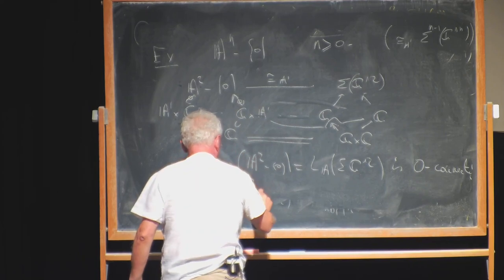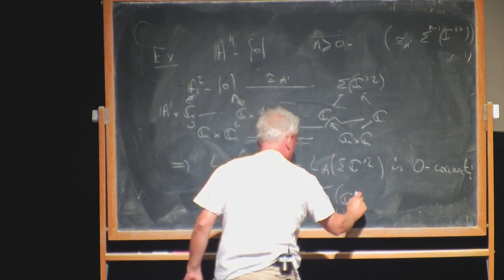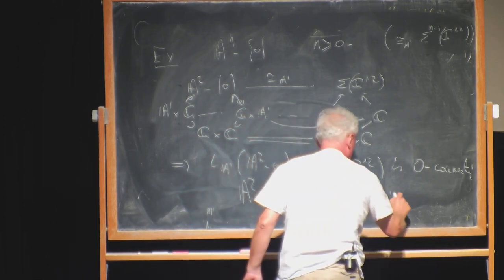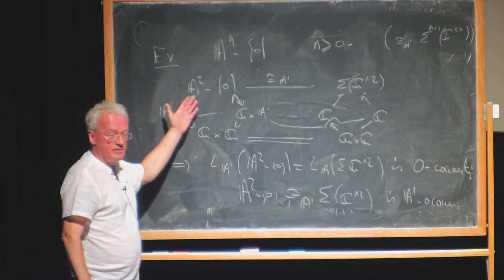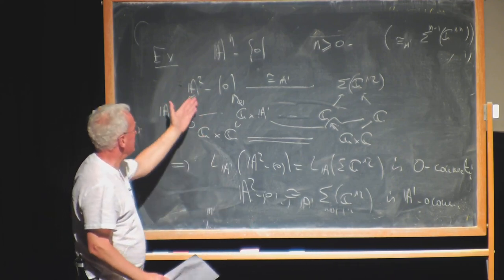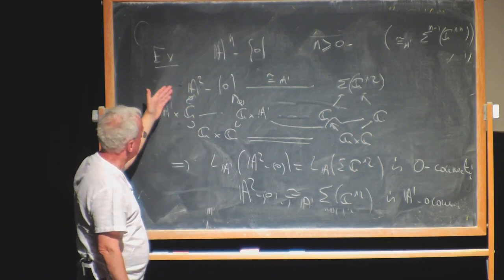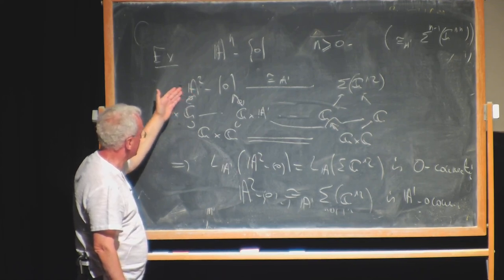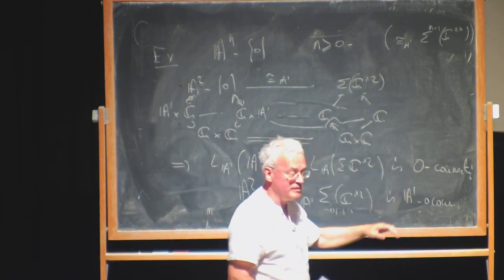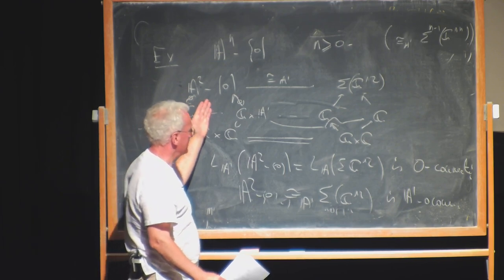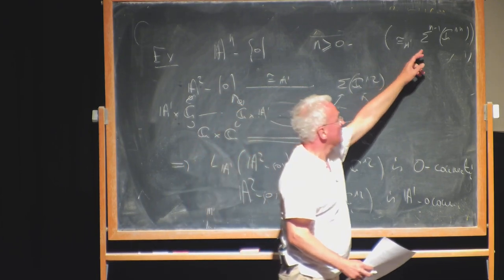So we can say: A^2 minus zero is A1 equivalent to Σ(G_m ∧ G_m) and is A1 zero-connected. You could also prove this directly: to be A1 connected it suffices to be A1 chain connected, and taking any field extension and rational points in this scheme, you can join any two points by a chain of A^1. So by hand you can prove A^2 minus zero is A1 connected.